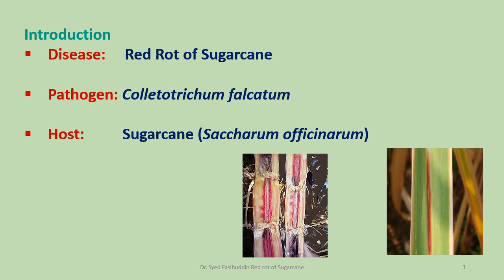Red rot of sugarcane was first reported from Java, Indonesia, by Wendt in 1893. During 1895 to 1900, the disease assumed epidemic proportions in the Godavari Delta of Andhra Pradesh. Butler in 1906 published a detailed account of this disease from Pusa, Bihar, and gave the name 'red rot.' Red rot is a serious disease of sugarcane in tropical as well as subtropical parts of the world, causing heavy losses to cultivators as well as to the sugar industry.